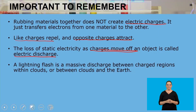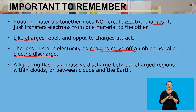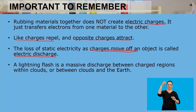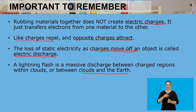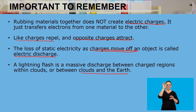Lastly, a lightning flash is a massive discharge between charged regions within clouds, or between clouds and the earth. The lightning flash is caused by the imbalance of charges between two regions.